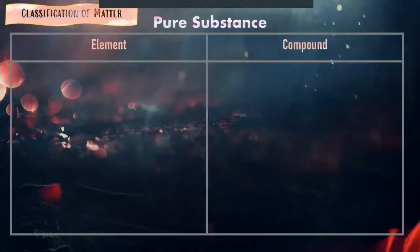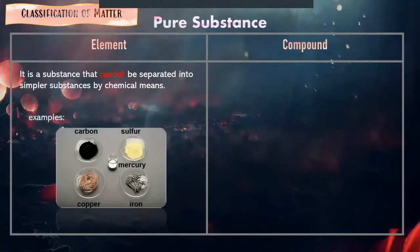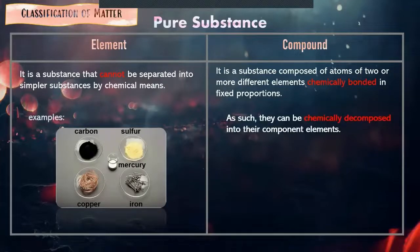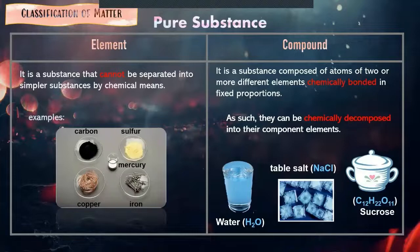Next, we are almost done. Pure substance can be element and compound. Element: it is substance that cannot be separated into simpler substances by chemical means. Dili siya pwede ma-separate. Examples are carbon, sulfur, mercury, copper, iron, or any elements in the periodic table. Compound, on the other hand, it is a substance composed of atoms of two or more different elements. Two or more different elements chemically bonded in fixed proportion. As such, they can be separated or chemically decomposed into their component elements. So we have here examples of compound: water, table salt, sucrose. So this water can be separated. We have these methods of separating mixtures or compounds. And that would be our lesson next week, probably. That ends our lesson.